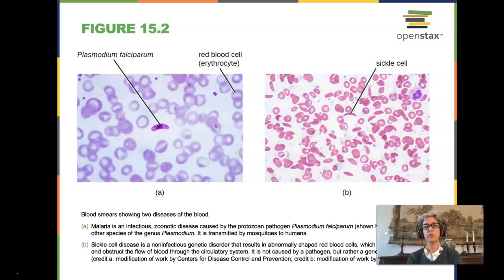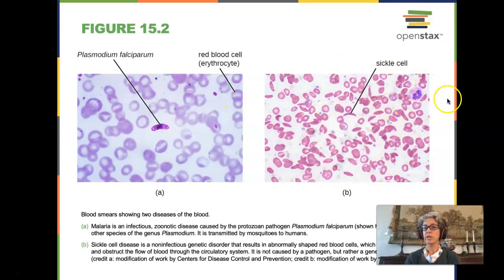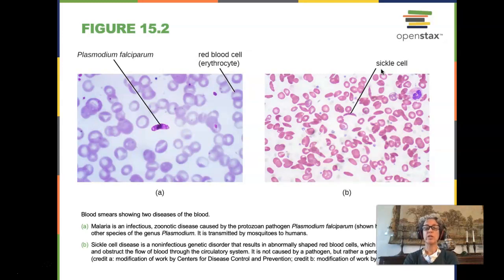This image shows blood smears with two very different ailments. On the left, malaria is caused by a protist — a eukaryotic microbe — specifically Plasmodium falciparum, stained among red blood cells. On the other side, we see red blood cells, a white blood cell, and a crescent-shaped sickle cell. Sickle cell disease is a genetic illness, not caused by a microbe, so it is not pathogenesis. A blood smear can help determine whether illness is due to a pathogen or a genetic condition.